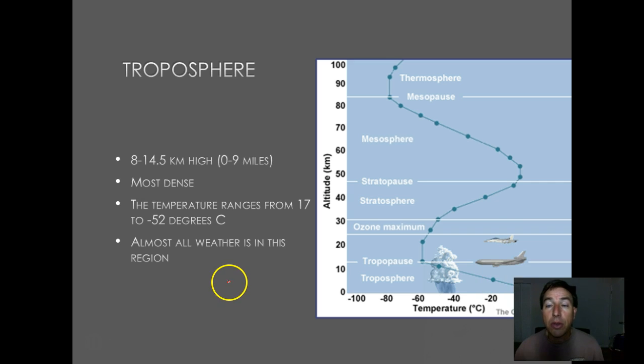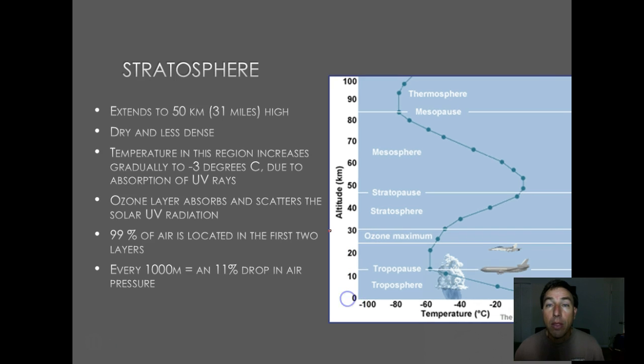As I said, the troposphere is the most important layer we're going to talk about. It goes to about 9 to 10 miles up in the atmosphere. It is the most dense layer, meaning it has the most particles of matter in it. It ranges from 17 degrees Celsius up to minus 52 degrees Celsius. Most of the weather is in this region.